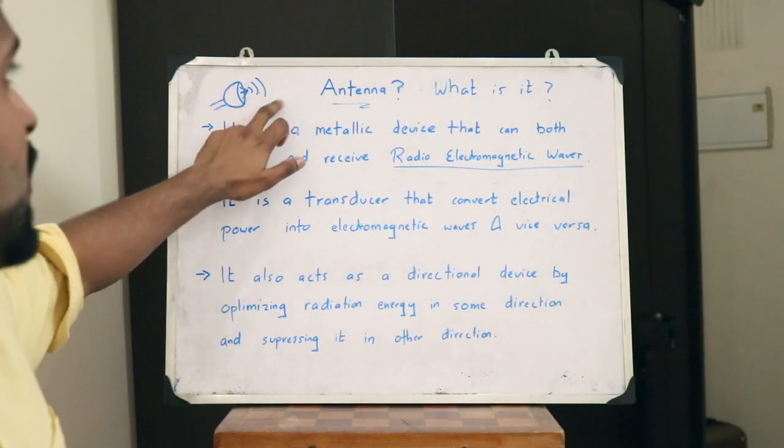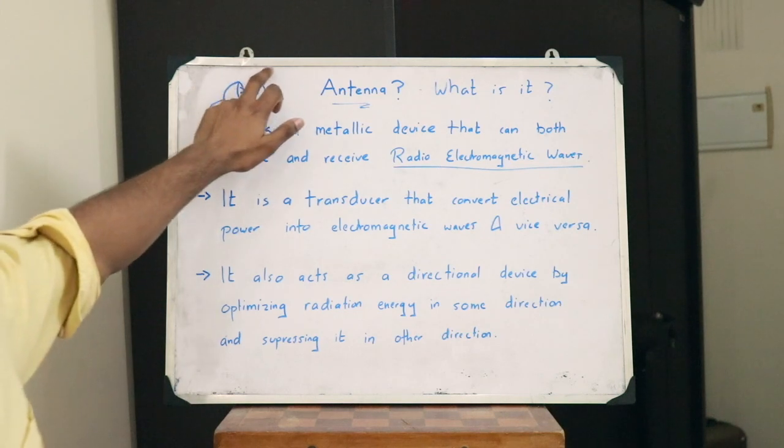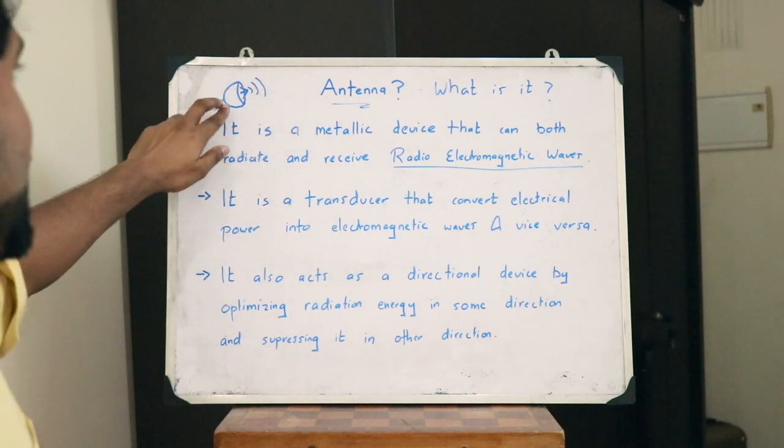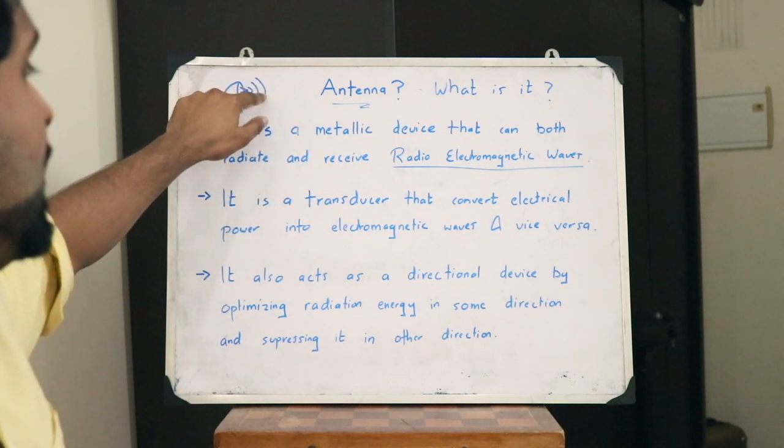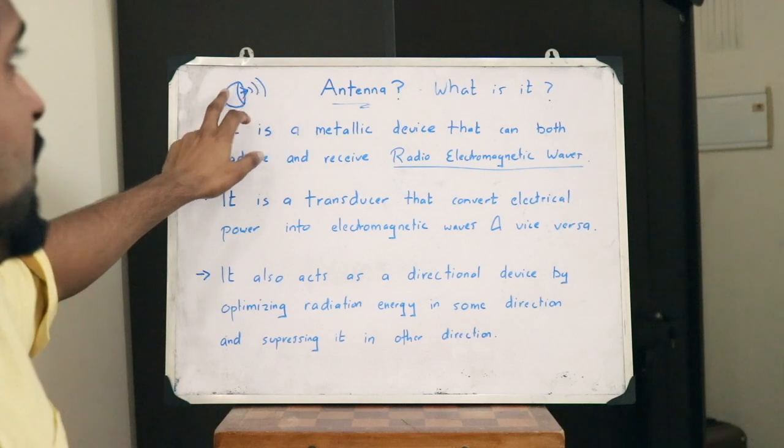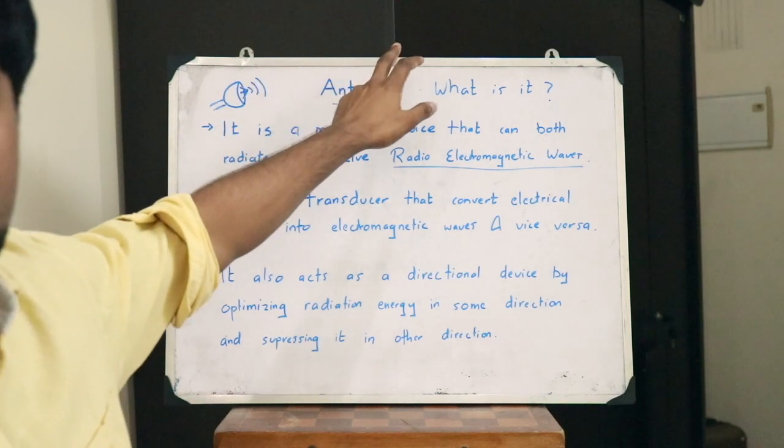Here I've drawn a small diagram of an antenna — it is basically transmitting electromagnetic radio waves in a particular direction, as a basic simple example. We'll be discussing much further in detail in the rest of the videos, so stay tuned. I hope you understood what an antenna is. If you have any doubts, you can ask in the comments. Thank you and see you in the next video.